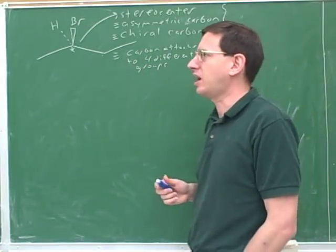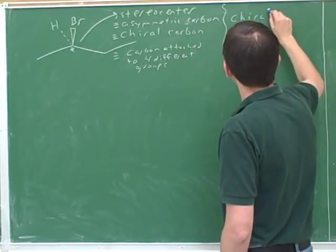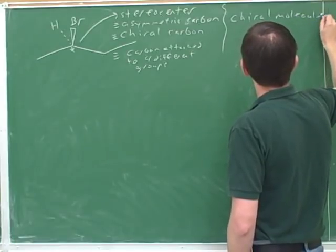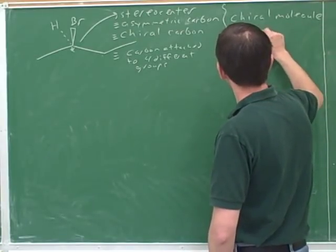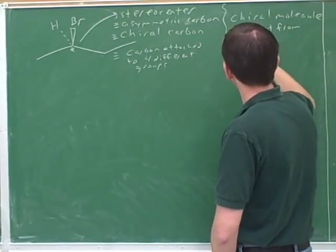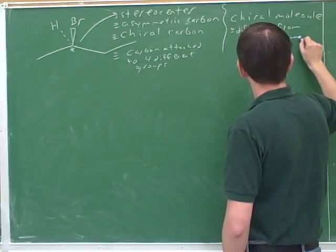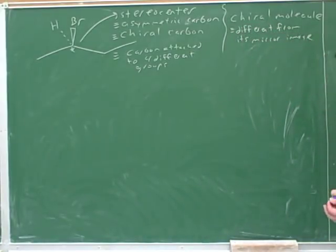Now, the other concept is the concept of a chiral molecule. Let's see. How should I define a chiral molecule? Well, I guess the best definition of a chiral molecule is it's a molecule that is different than its mirror image. A chiral molecule, that's what chiral means. It means you're different than your mirror image. So a chiral molecule is something that is different from its mirror image.